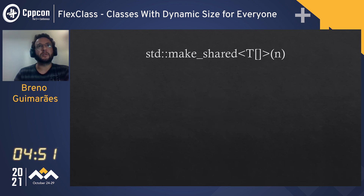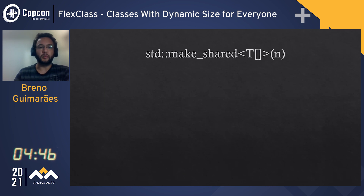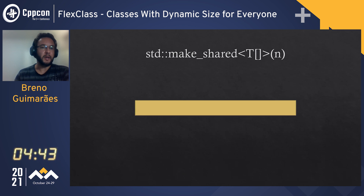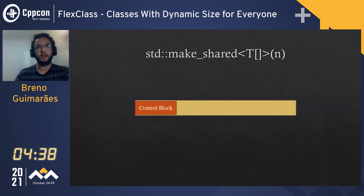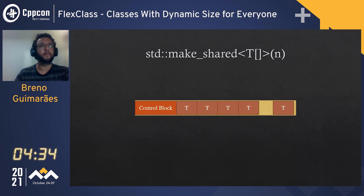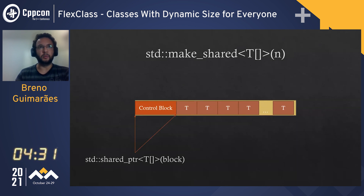My story starts with makeShared of an array of T with n elements. This function has a very nice property: it creates a big block of memory, puts the control block of the shared pointer right at the beginning, then puts every element right next to it, and returns a shared pointer that handles this memory.